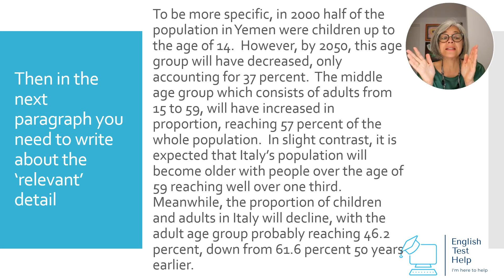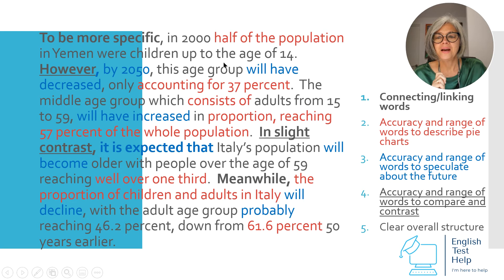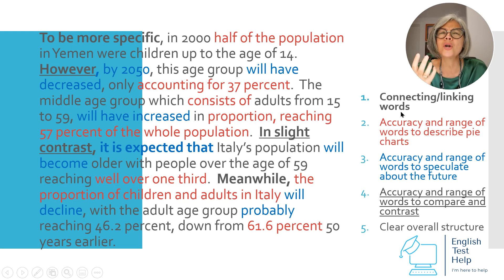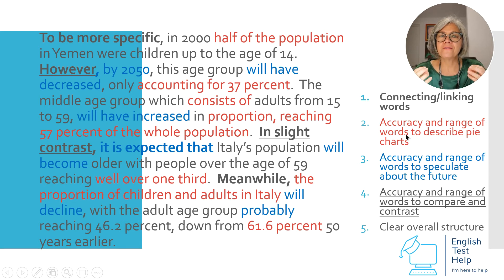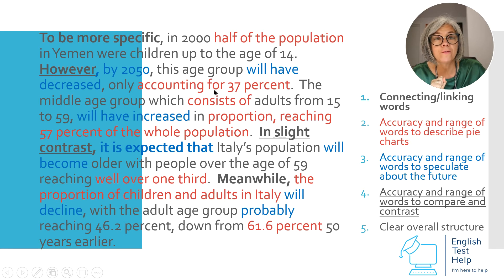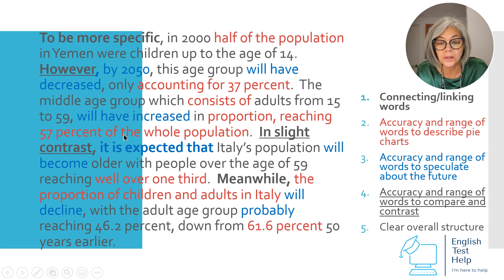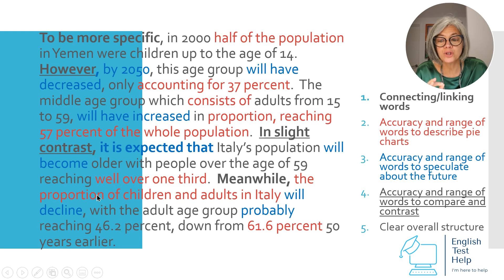Now I'll show you this same paragraph again and highlight the good features. In bold, the connecting or linking words: 'to be more specific,' 'however,' 'in contrast,' 'meanwhile.' In red are the language features to describe data from pie charts: 'half,' 'account for,' 'consist of,' 'proportion,' 'number percent of the whole,' 'one third,' 'well over one third,' and 'the proportion of.'